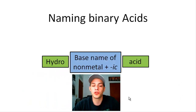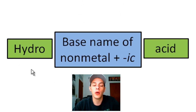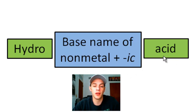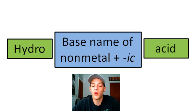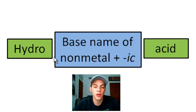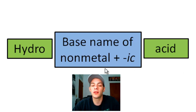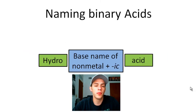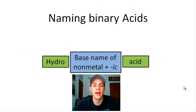To name any binary acid, you include the prefix hydro, then the base name of your nonmetal, plus the suffix -ic, and then the word acid. No matter what binary acid you have, you'll always have hydro and -ic and acid. The only thing that changes is the base name of your nonmetal.